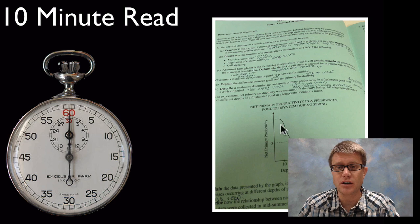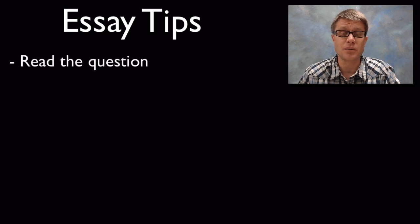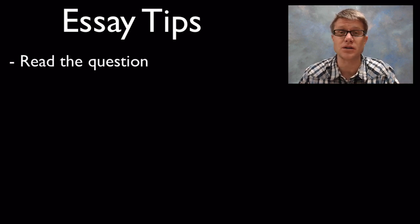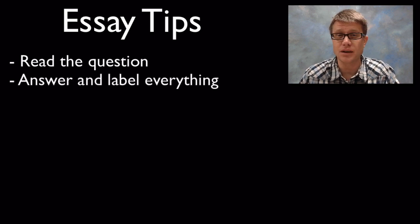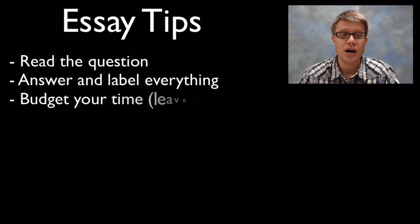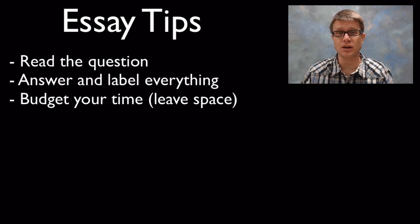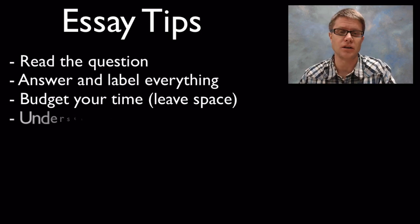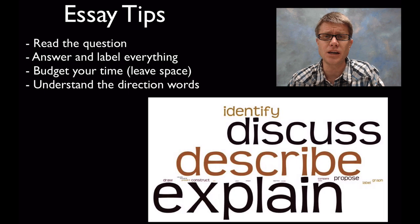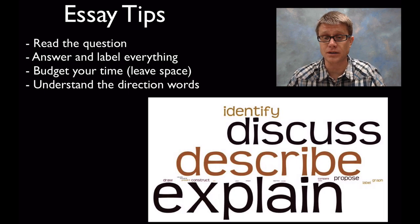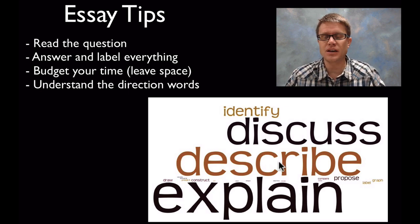The test is broken down into two parts. Section 1 is the multiple choice section and section 2 is free response. Each of those sections gives you half your score — 50% each — which is different than in the past. The multiple choice section gives you 90 minutes, 63 multiple choice questions each with 4 responses (it used to be 5), and then 6 grid-in questions where you'll use a calculator. For the free response portion, you have 10 minutes to read the essays, then 80 minutes to write. There are 8 essays total: 2 long free response and 6 short free response.